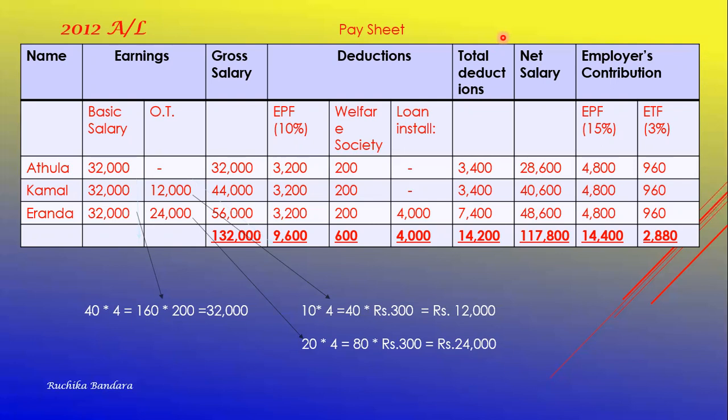Roman number two: the hourly rate for weekdays is 2,200 per hour. Overtime rate for the weekend is one and a half times of the weekday rate. Number three: EPF contribution by employer and employee are 15% and 10% respectively. ETF contribution by the employer is 3%. Overtime payments are not considered in calculating EPF and ETF — that means you have to get EPF and ETF from the basic salary only.